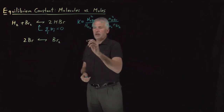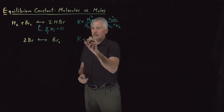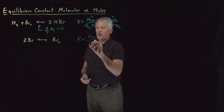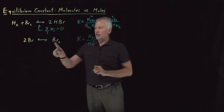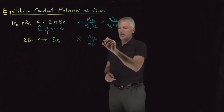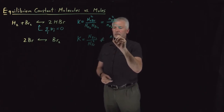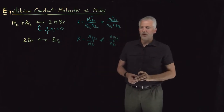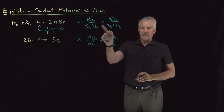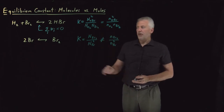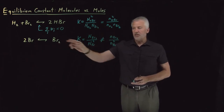We can't do that for the second reaction. The equilibrium constant is molecules of Br₂ over molecules of Br squared — products over reactants — and that's not going to be the same thing if I write down moles of Br₂ over moles of Br squared. If you have the same number of molecules on each side, it doesn't matter whether you use molecules or moles. If you have a different number, then it does matter.